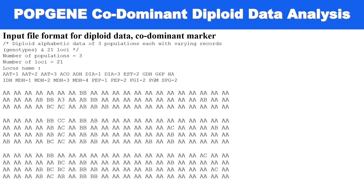This is the basic file format for diploid data analysis. The first four lines are about the introduction of your data file. The first line is the title of your data file, using a backslash star. The second line is the number of populations, which equals three. Here there are three types of populations. The number of loci is 21, and the fourth line contains the locus names.